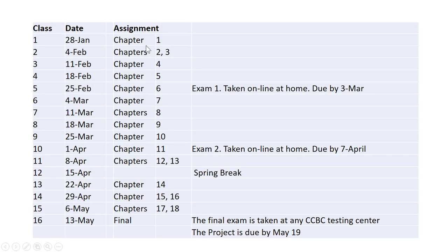Now let's look at the schedule. Each week we cover one or two chapters. Week one is chapter one; week two is chapters two and three; week three is chapter four; week four is chapter five; the week of February 25th we do chapter six, followed by Exam One, which covers chapters one through six. Exam One is taken online at home — you can only take it once, and it's due before the next week. The following week covers chapters seven through eleven, then Exam Two covers those same chapters. It's also taken online at home, one attempt, due before the next week.